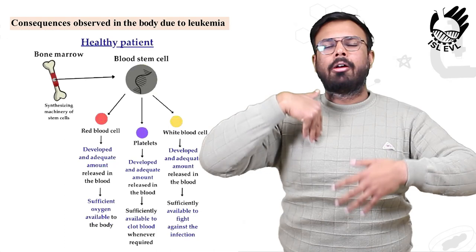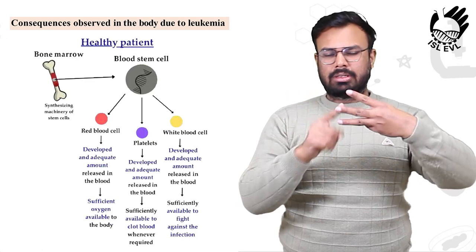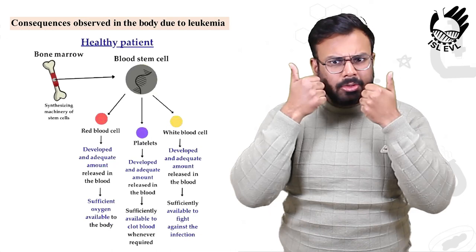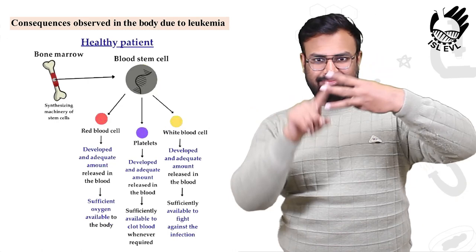Platelets are sufficiently available to clot blood whenever required. And third, WBC develop an adequate amount released in the blood, sufficiently available to fight against the infection.